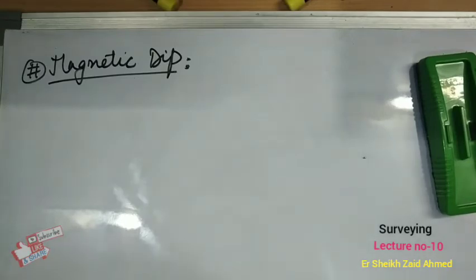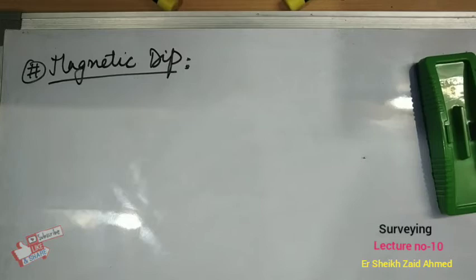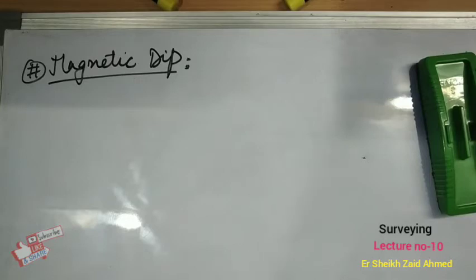A perfectly balanced needle after magnetization will dip towards north in the northern hemisphere. In the southern hemisphere it will dip towards south. If taken to the pole of the earth, the needle will take a vertical position. The vertical angle between the horizontal at a point and the direction shown by a perfectly balanced needle is known as dip or magnetic dip.